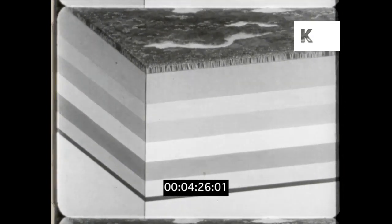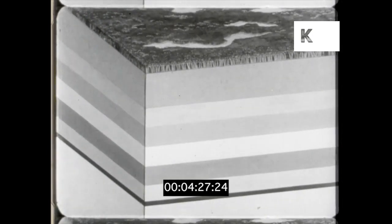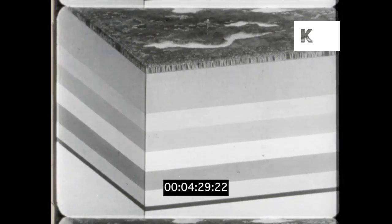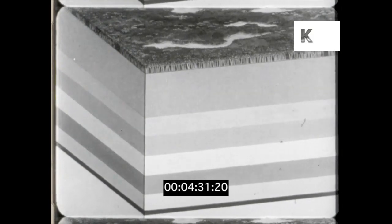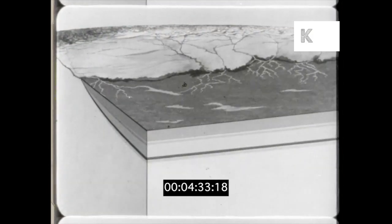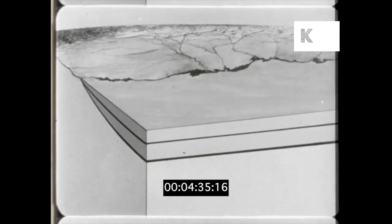It took about a yard of peat to make an inch of coal. This went on for 75 million years in a regular pattern. Many forests grew and were drowned and many seams of coal were formed.